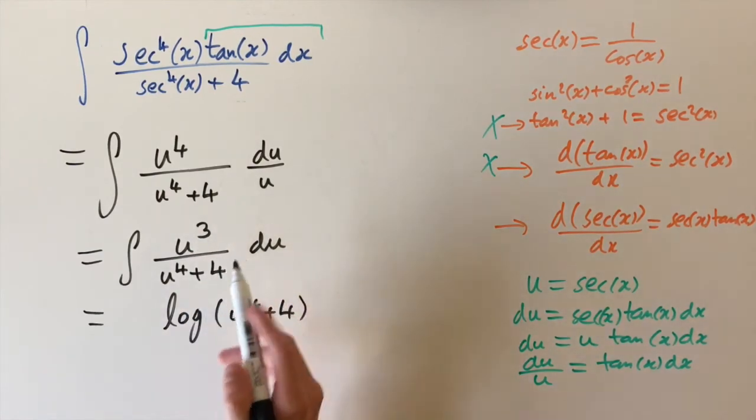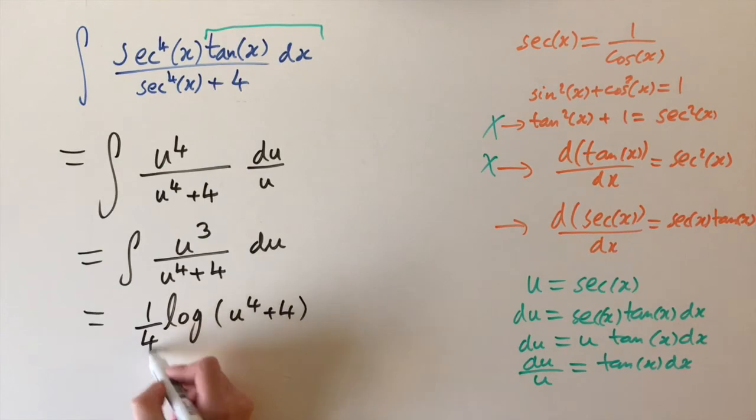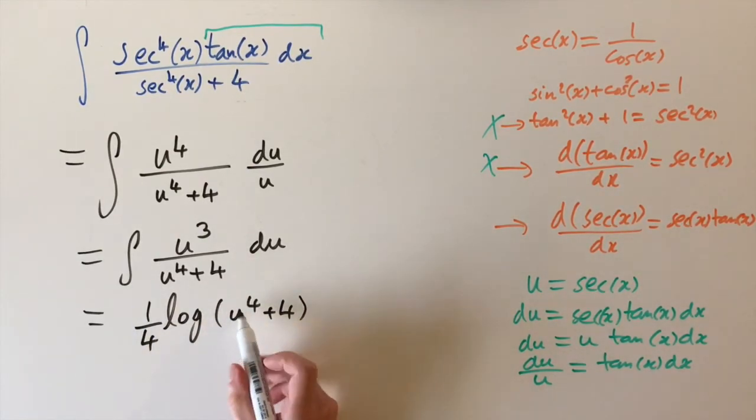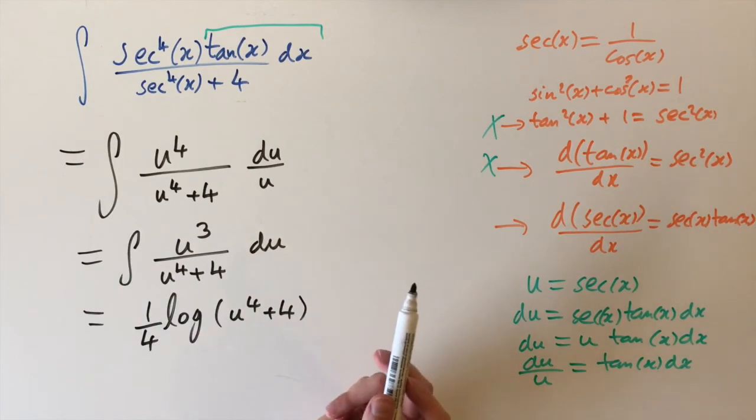And we have the u cubed, which is nice, but we need to divide by four. So then the four cancels with the quarter here, and we're just left with u cubed on the top. So this is going to be our answer.